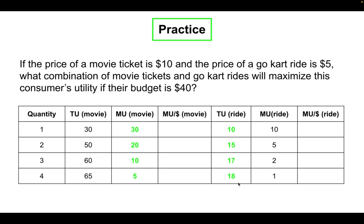Now calculate the marginal utility per dollar for movies and rides. Divide each marginal utility for movies by the price of $10, and divide each marginal utility for rides by the price of $5. The MU per dollar values for movies are 3, 2, 1, and 0.5, and for rides are 2, 1, 0.4, and 0.2.